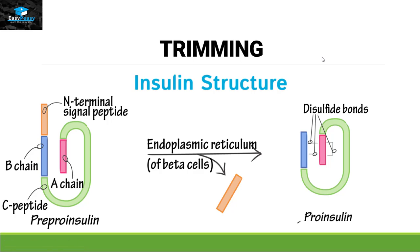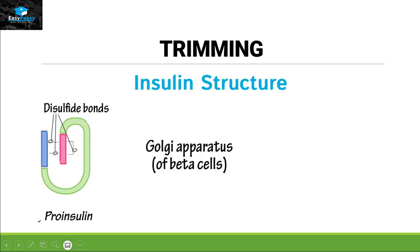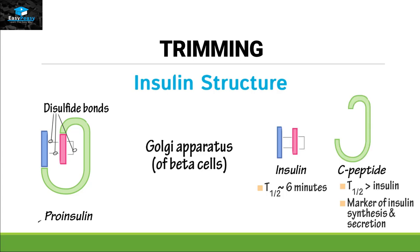Still, this protein is inactive because it is pro-insulin, not insulin. The process of trimming continues further and the attachment of disulfide bonds occurs. In the Golgi apparatus, the final trimming is done and active insulin is released to perform its function, while the C-peptide gets degraded after some time. So insulin is a perfect example of signal sequence trimming.